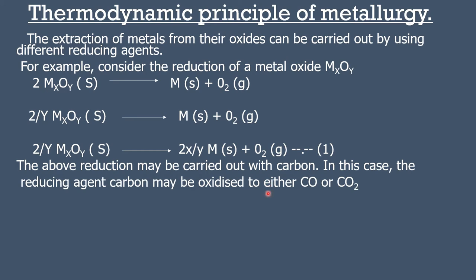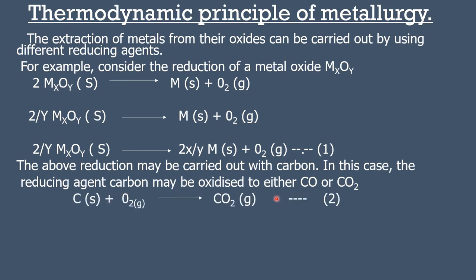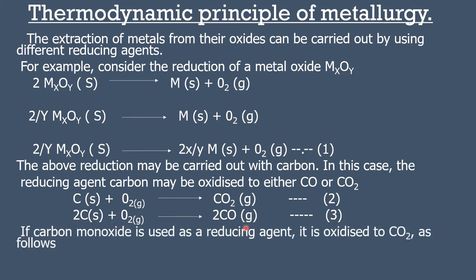In this case, the reducing agent is carbon. This reducing agent, carbon, gets oxidized. Carbon is oxidized into carbon dioxide, or carbon is first oxidized into carbon monoxide, and then this carbon monoxide is further oxidized into carbon dioxide.